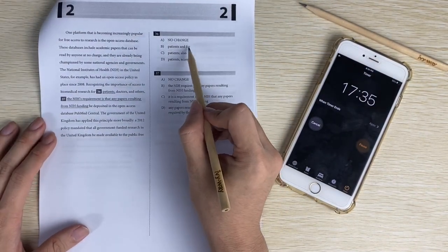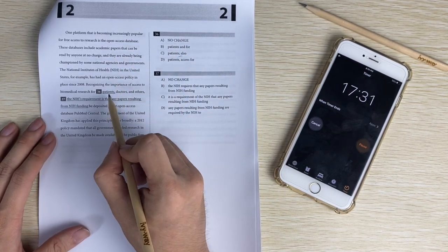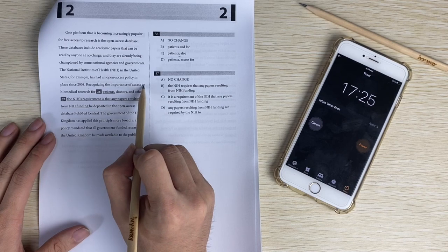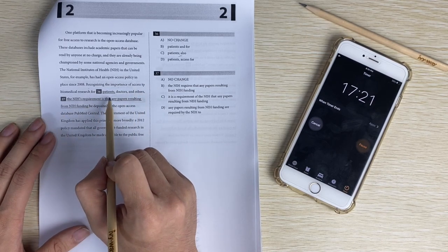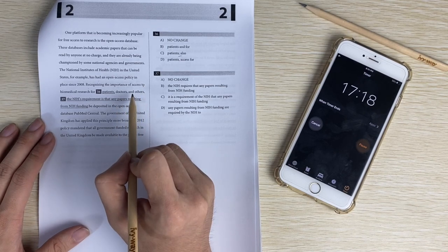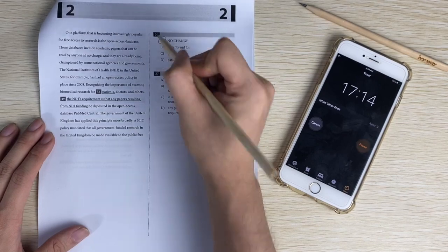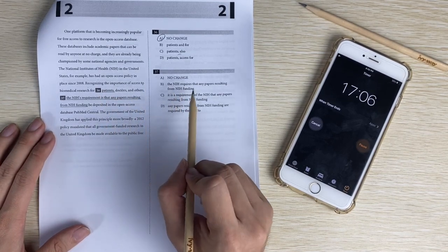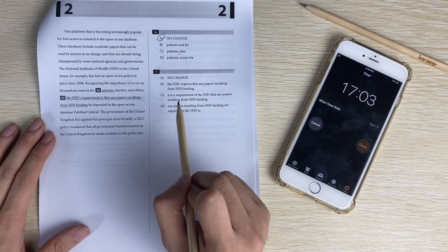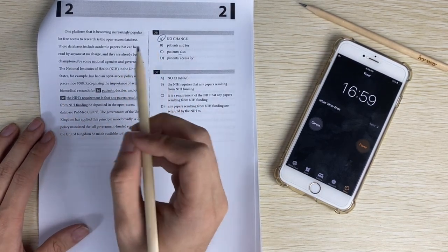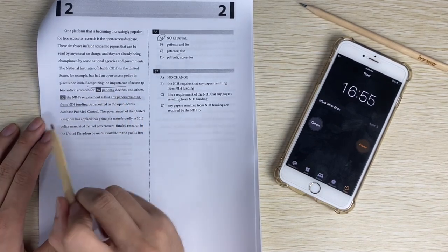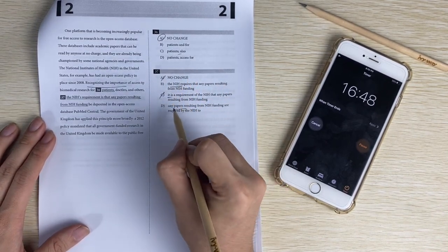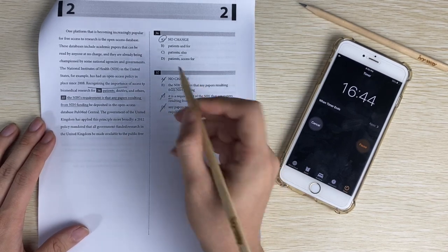Number thirty-six, patients. Fragment and run-on question. So the passage says the NIH had open access policy recognizing the importance of access to biological research for patients, doctors, and others. Looks too easy to be correct. Parallelism. Number thirty-seven, recognizing. This is their meanings. Maybe modifier questions. Yes, modifier questions. First part, recognizing the importance. Who is recognizing? Not the requirements are recognizing. The NIH might be recognizing. Not it, not any paper. Paper doesn't, any paper resulting. Not the paper recognizing. So it's NIH.